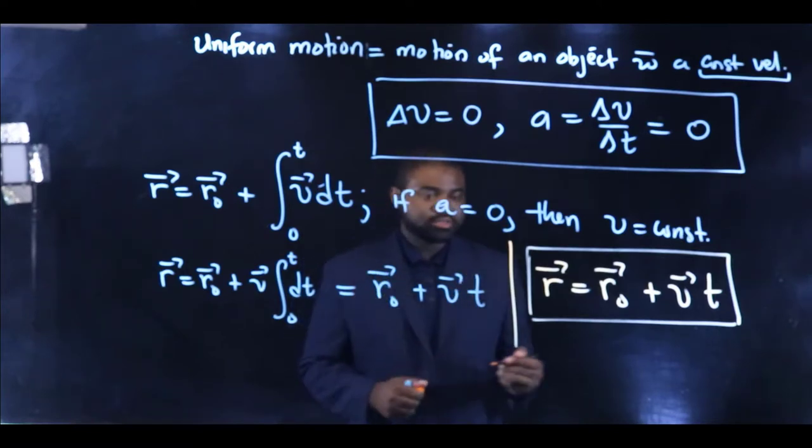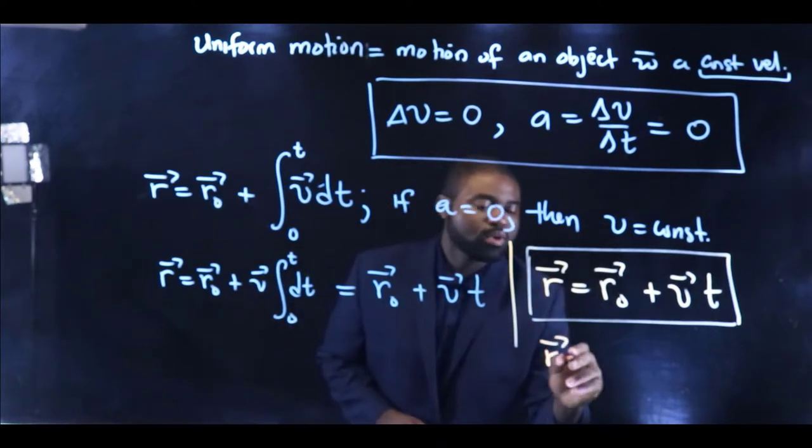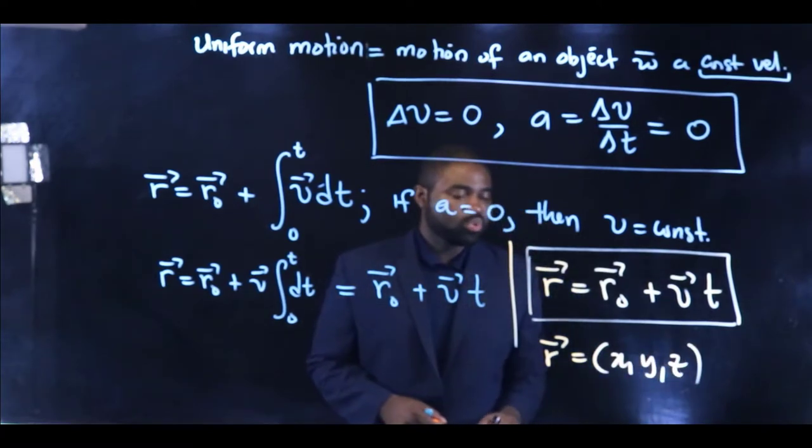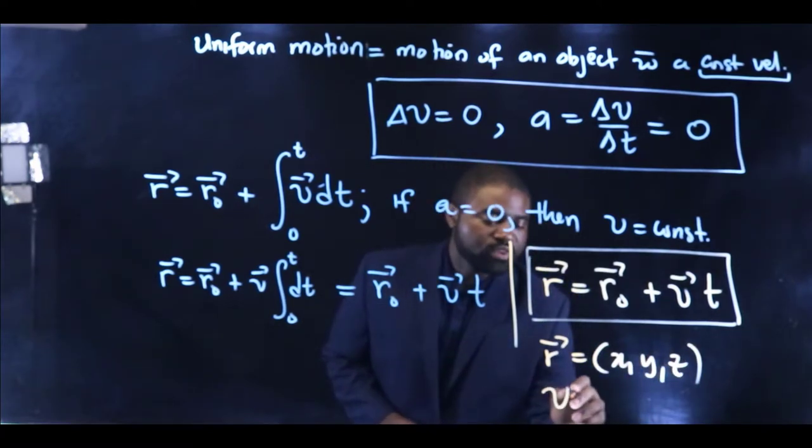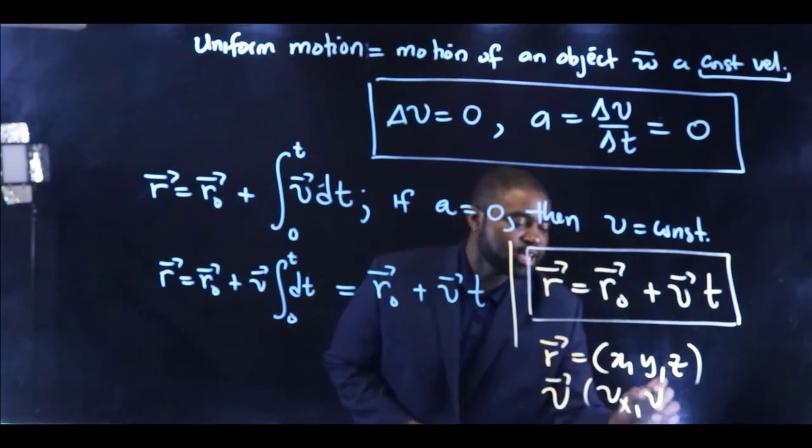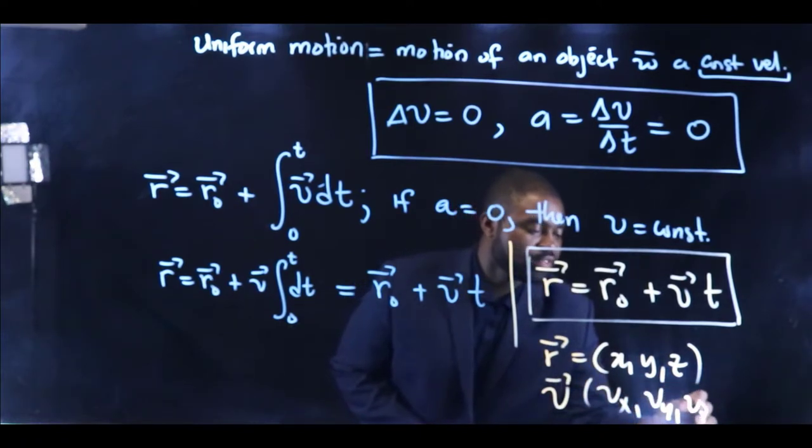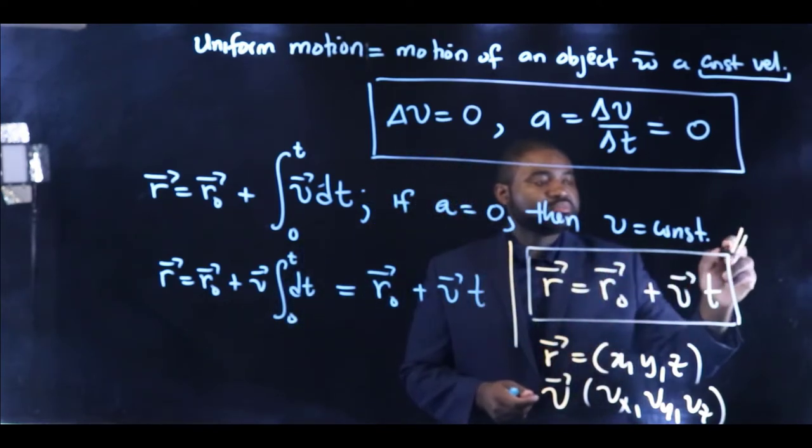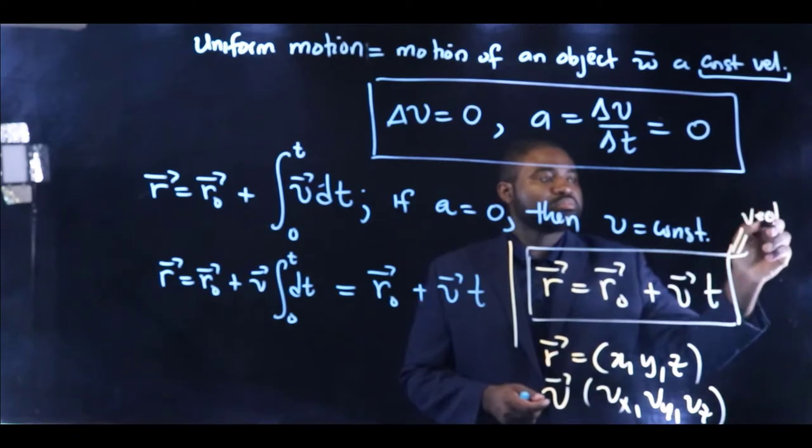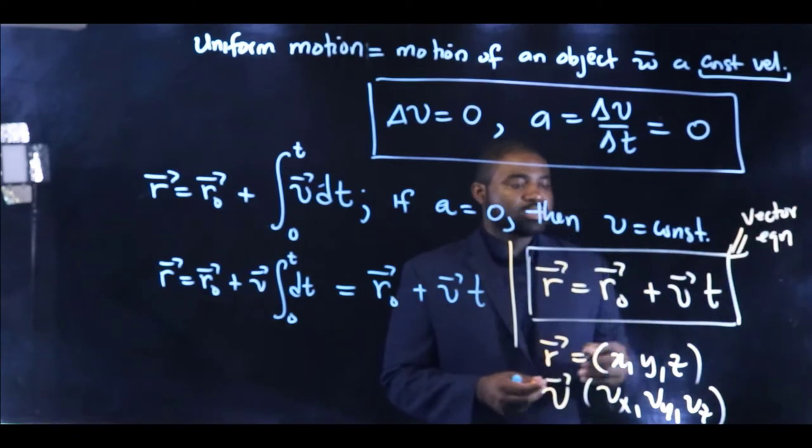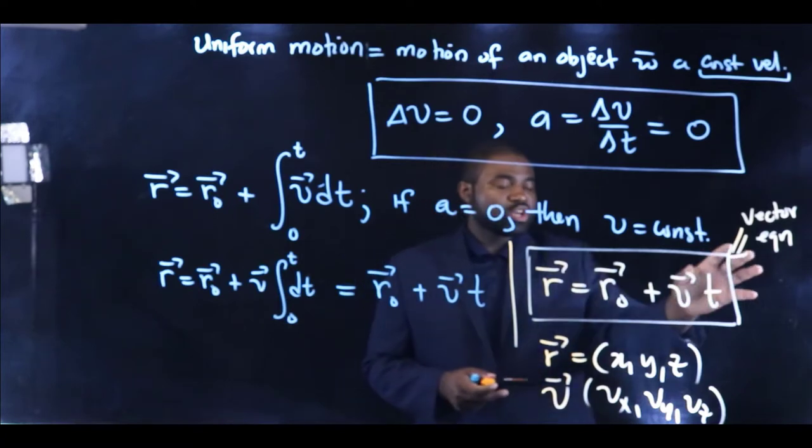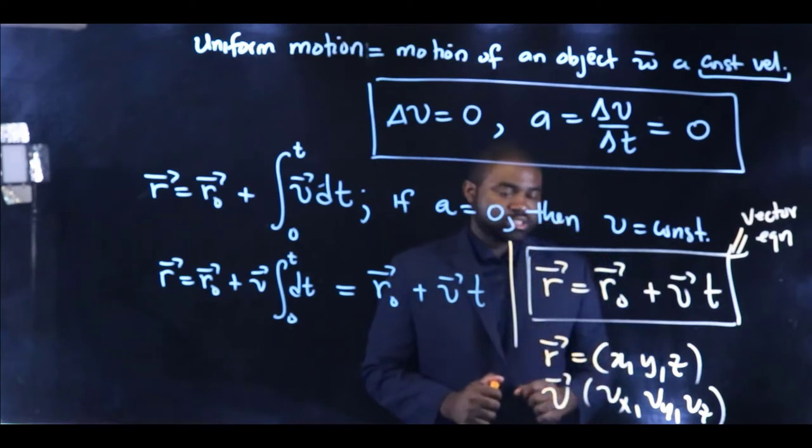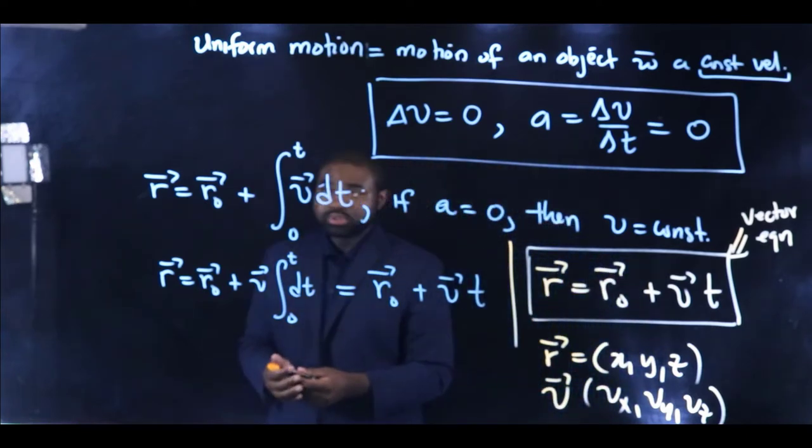Now, here's the deal. R⃗ has an XYZ component. V⃗ has an XYZ component. And if it is a vector equation, this equation embodies three equations in itself, one for each direction.